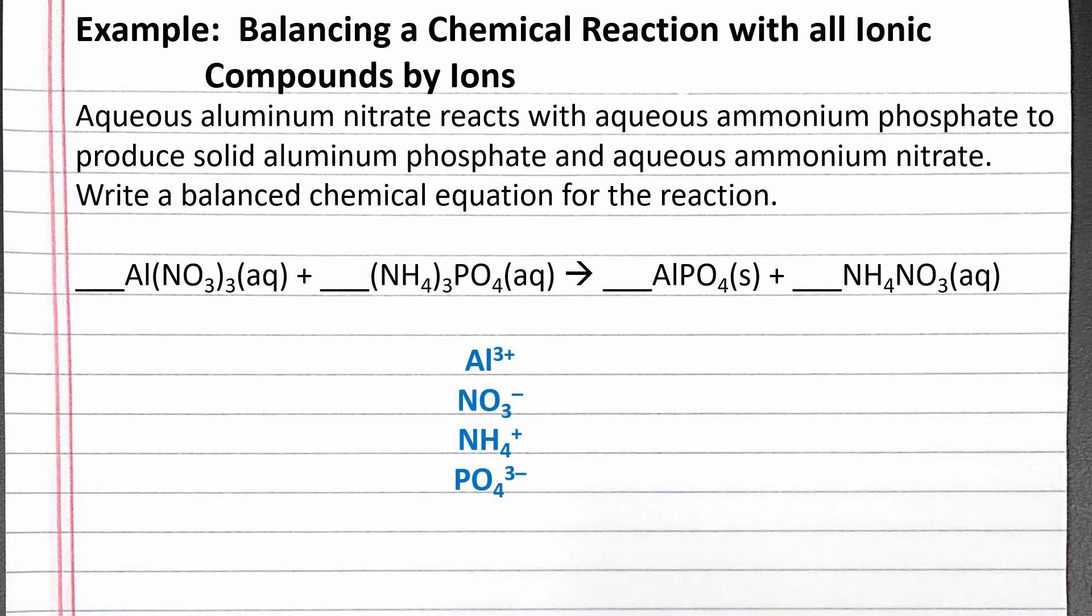We want to balance Al3+, nitrate, ammonium, and phosphate ions. Since each ion only shows up in one compound on each side, we can balance them in any order.